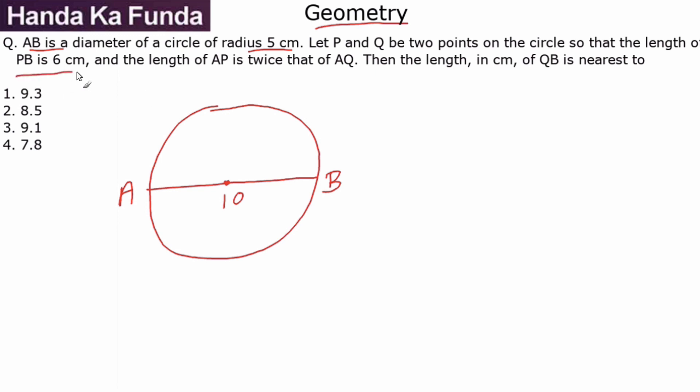Now if you join AP you will realize that APB is a right angle triangle. How can I say that? Because the diameter forms a 90 degree always with a point on the circumference.